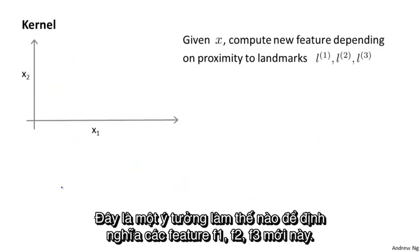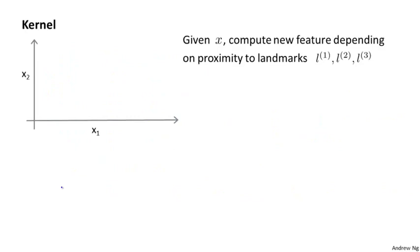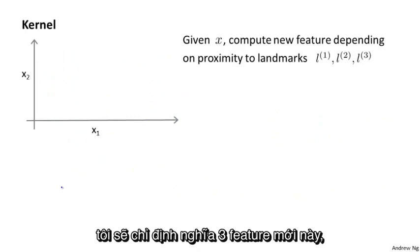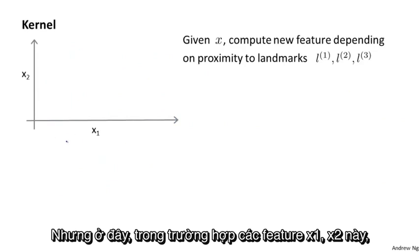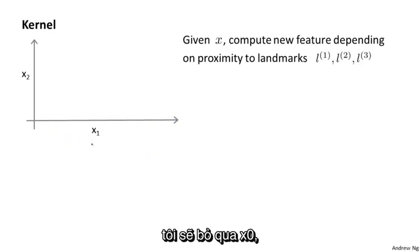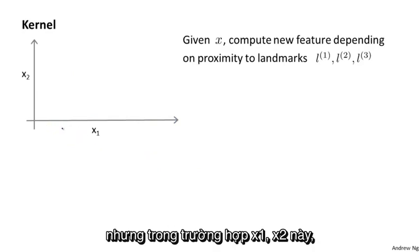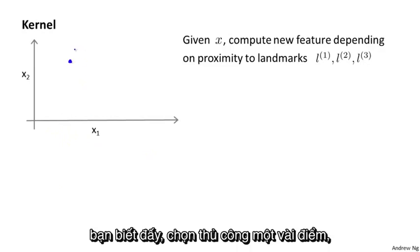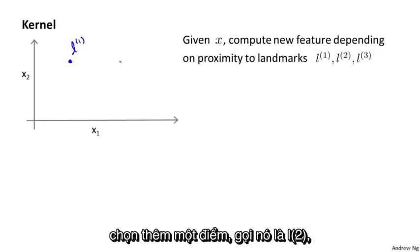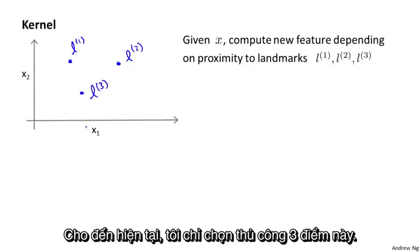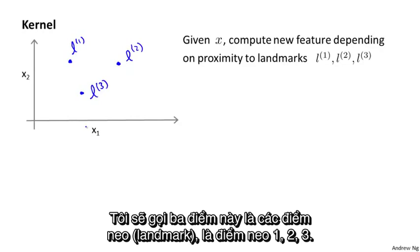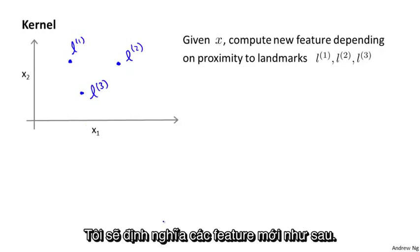Here's one idea for how to define new features f one, f two, f three. I'm going to define only three new features on this slide, but for real problems we'd define many more. In this space of features x one, x two — leaving out the intercept term x zero — I'm going to manually pick a few points. I'll call this point l one, a different point l two, and a third one l three. I'm going to call these three points landmarks: landmark one, two, and three. What I'm going to do is define my new features based on these landmarks.